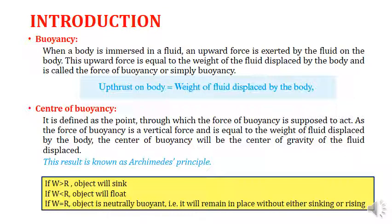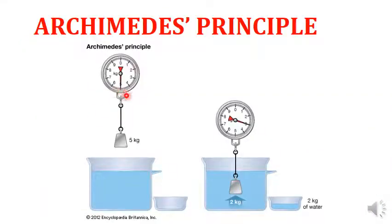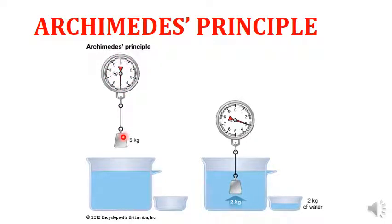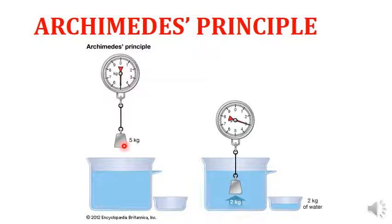Archimedes' principle can be explained as follows: if a body in air has a weight of 5 kg measured by a scale, this 5 kg is shown on the dial. Now if you immerse this 5 kg mass into a fluid while keeping one outlet to measure the fluid displaced by the body, what is the resultant weight of the body after immersing inside the fluid?